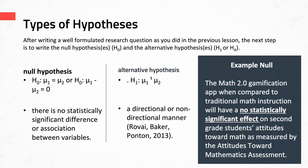Let's apply this to an example. Let's say a researcher poses the question: what is the effect of the Math 2.0 gamification app on second grade students' attitudes toward math? The corresponding null hypothesis could be that the Math 2.0 gamification app, when compared to traditional math instruction, has no statistically significant effect on second grade students' attitudes toward math. So the null hypothesis states that there is no statistically significant effect, difference, or relationship.